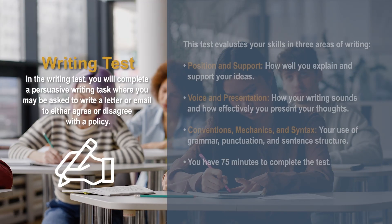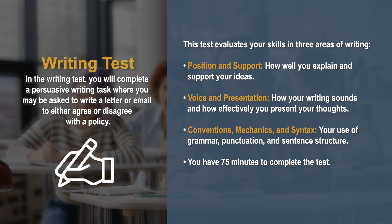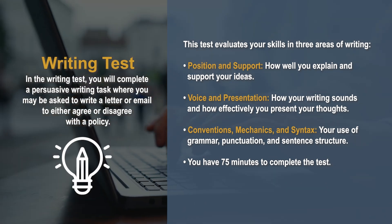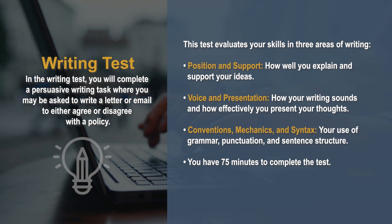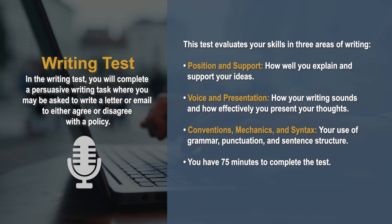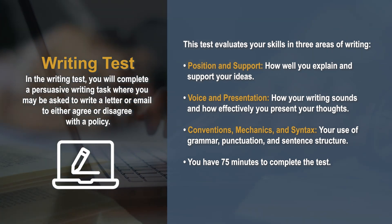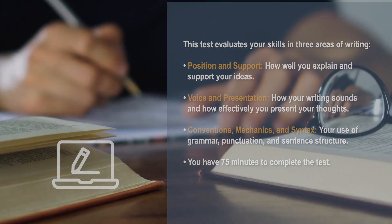In the writing test, you will complete a persuasive writing task, where you may be asked to write a letter or email to either agree or disagree with a policy. This test evaluates your skills in three areas: position and support — how well you explain and support your ideas; voice and presentation — how your writing sounds and how effectively you present your thoughts; and conventions, mechanics and syntax — your use of grammar, punctuation, and sentence structure. You will have 75 minutes to complete the test.